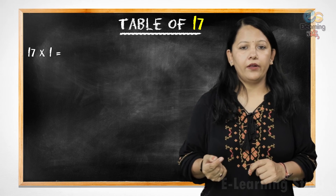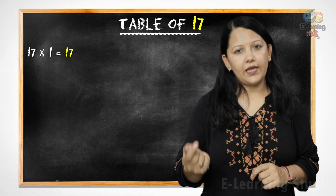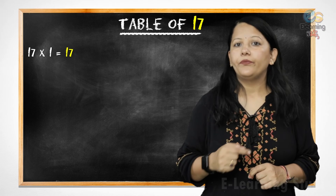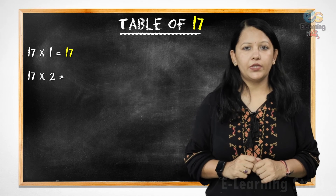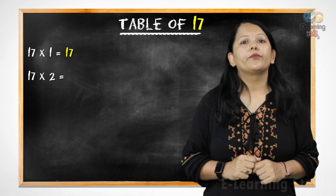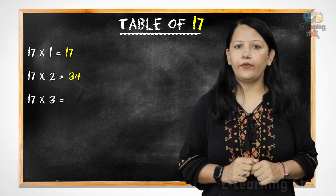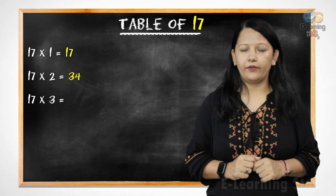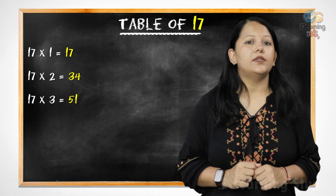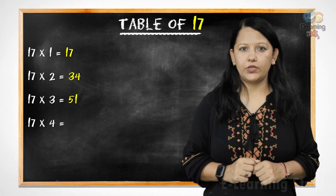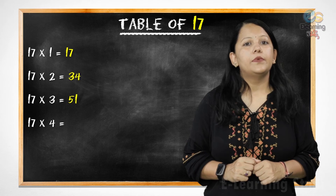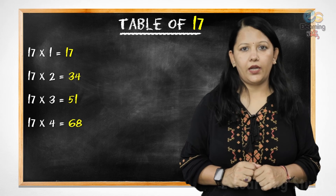Now let's revise it. 17 ones are 17, 17 twos are 34, 17 threes are 51, 17 fours are 68,